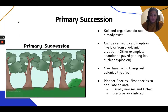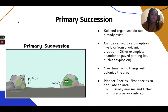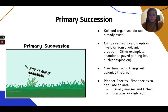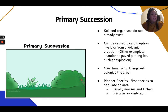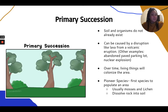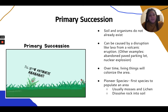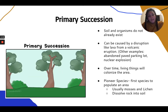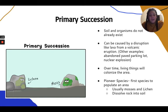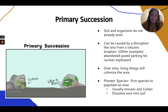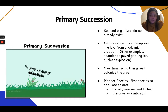There are two types of succession: primary succession and secondary succession. In primary succession, soil and organisms don't exist yet — it's just bare rock basically. This could be caused by a disruption like lava from a volcanic eruption, or even an abandoned paved parking lot or a nuclear explosion.